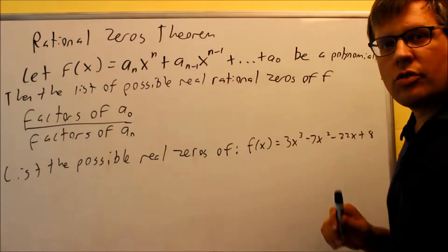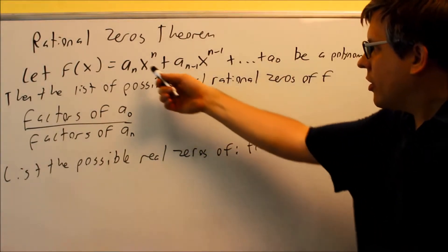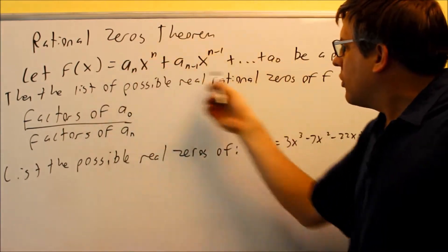Okay, now we're going to talk about the Rational Zeros Theorem. Here is our polynomial. This should look familiar.